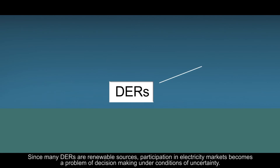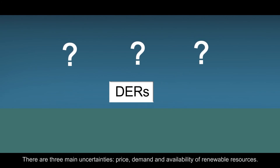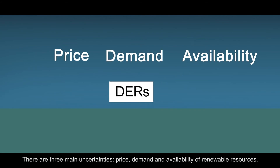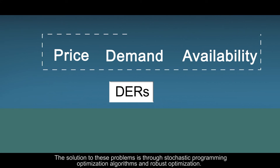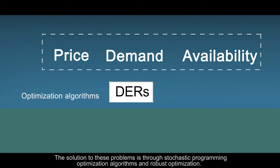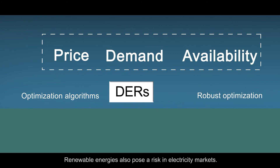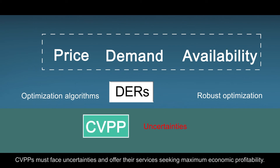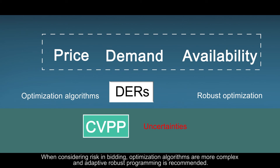Since many distributed energy resources in the electricity system are renewable sources, participation in electricity markets becomes a problem of decision making under conditions of uncertainty. There are three main uncertainties: price, demand and availability of renewable resources. The solution to these problems is through stochastic programming, optimization algorithms and robust optimization. Renewable energies also pose a risk in electricity markets. Commercial virtual power plants must face uncertainties and offer their services seeking maximum economic profitability. When considering risk and bidding, optimization algorithms are more complex and adaptive, and robust programming is recommended.